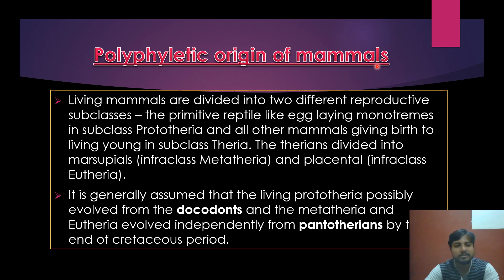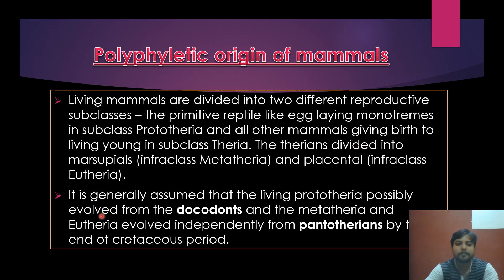Under the accepted polyphyletic origin, living mammals are divided into two reproductive subclasses: the primitive egg-laying monotremes in subclass Prototheria, and all other mammals giving birth to young in subclass Theria. Theria is further divided into infraclass Metatheria (marsupials, having a marsupium or pouch) and infraclass Eutheria (placentals, which give birth to fully developed young). It is generally assumed that living Prototheria evolved from docodonts, while Metatheria and Eutheria evolved independently from pantotheres.